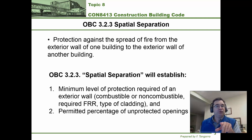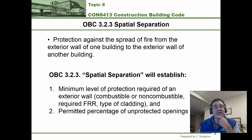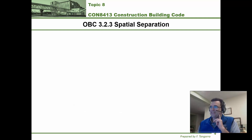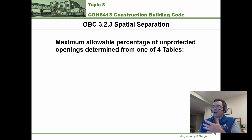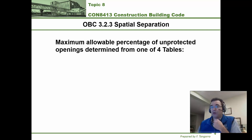If you don't remember what combustible means, what non-combustible means, or what FRR stands for, go back to topics 5 and 7 — they're covered in more detail there. The maximum allowed percentage of unprotected openings — the maximum percentage of area that is allowed to be unprotected openings for a wall — are covered in one of four tables.